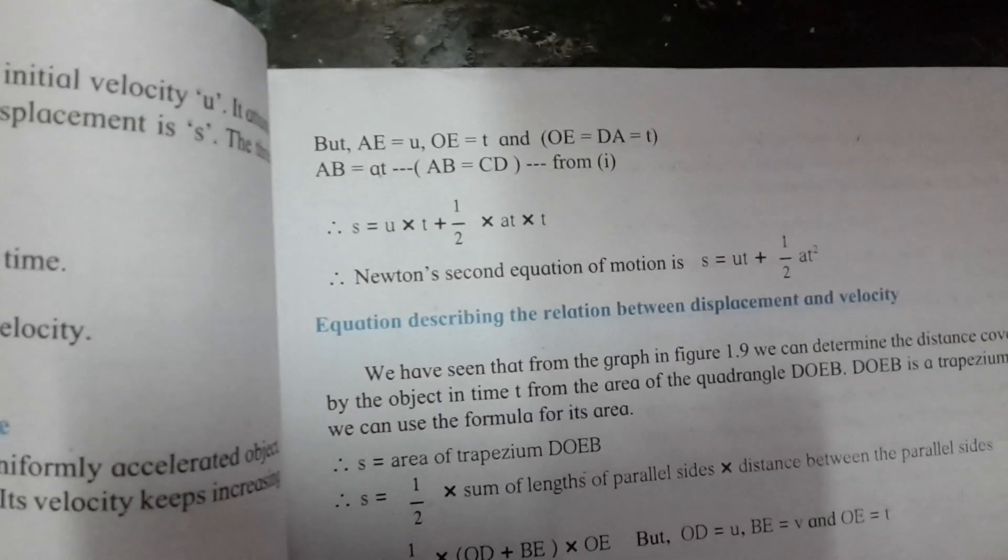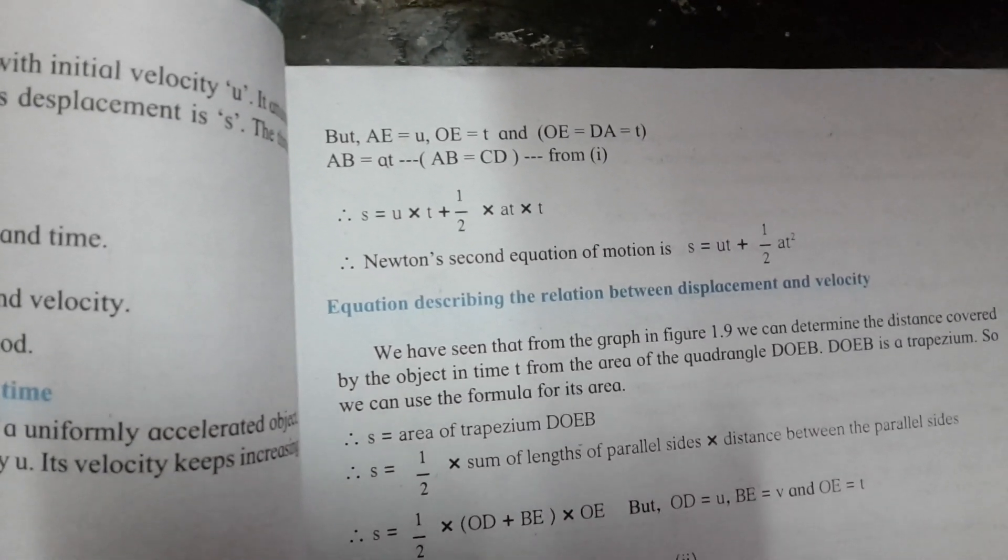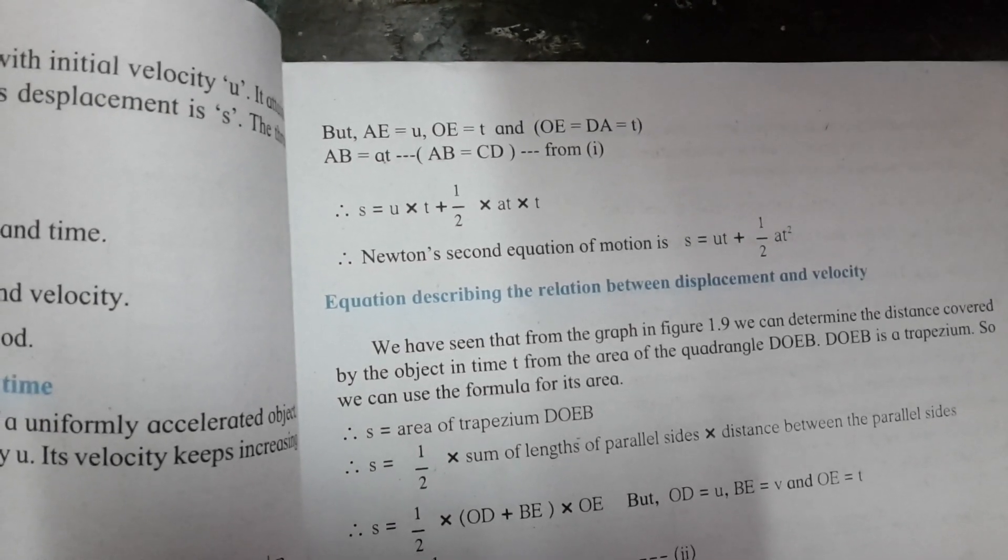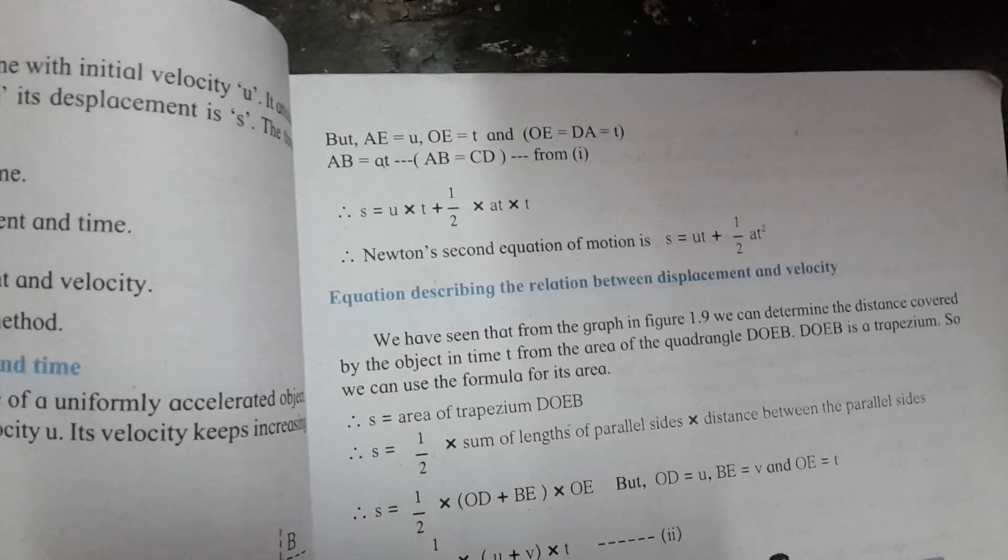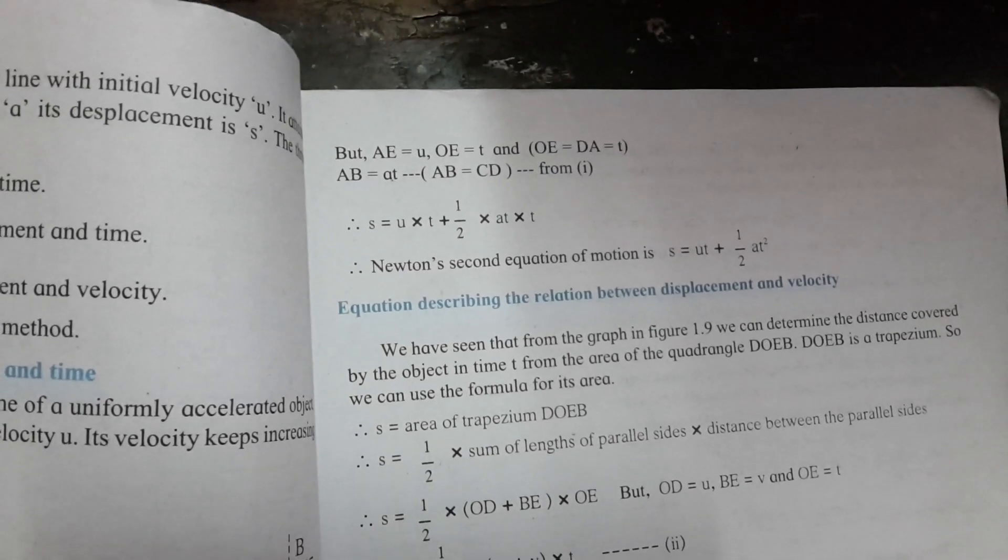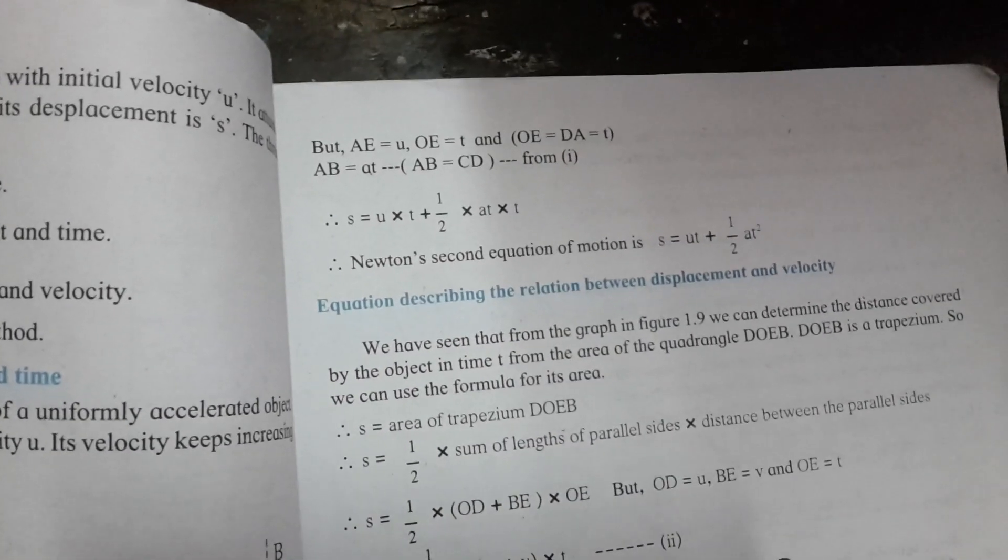S equals U times T plus half A times T squared. This is the second equation. S equals UT plus half AT squared.